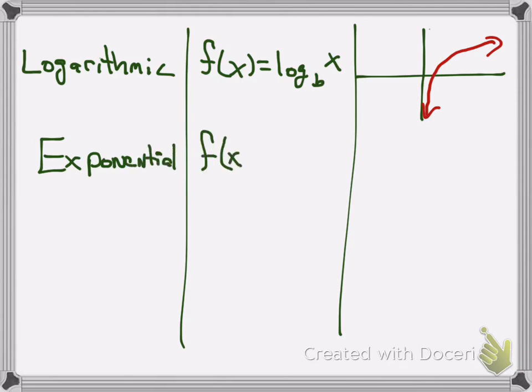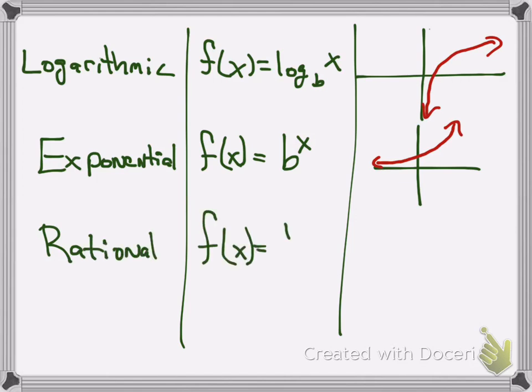Then we have exponential. And exponential does that, where it kind of goes across like that, and it's getting closer to the x. And then you have rational function, where they kind of have like two little curves, one in the first quadrant, one in the third quadrant. And that's really about it.